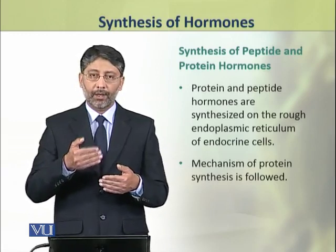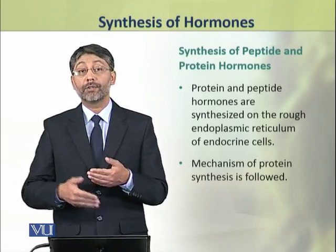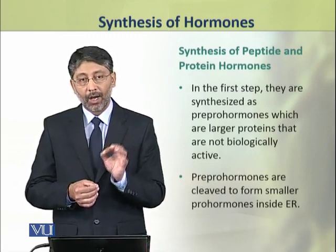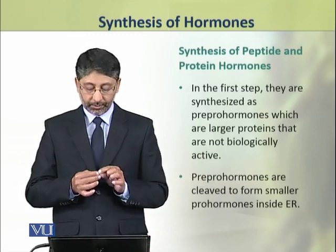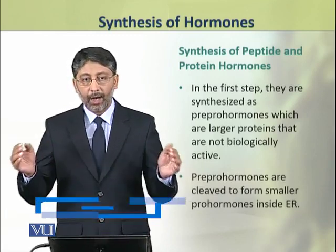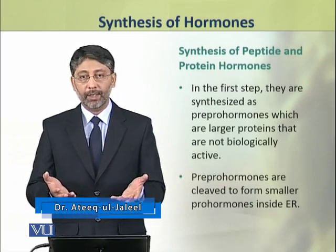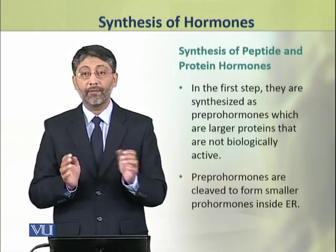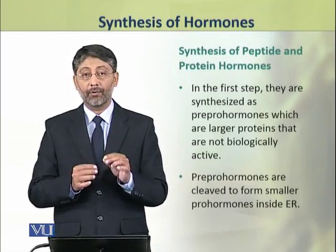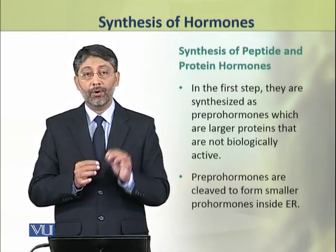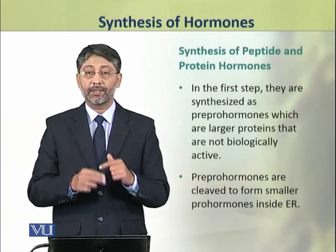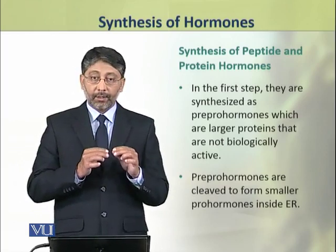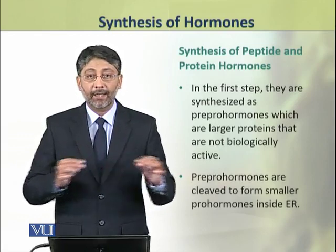There are transcription, translation, and post-translational modifications. The hormones in the first step are produced as large proteins. They are comparatively larger in size and have extra amino acids. This hormone is called pre-pro-hormone. It is a direct result of translation of the transcripted messenger RNA. This pre-pro-hormone is not the active form of the hormone.